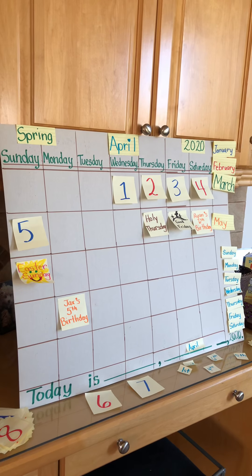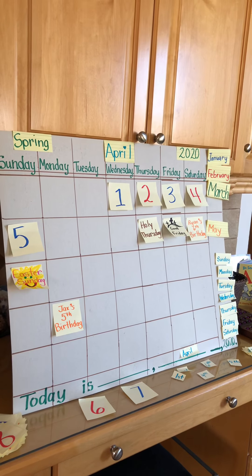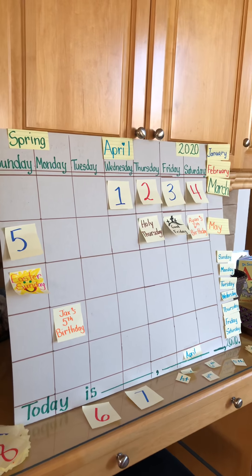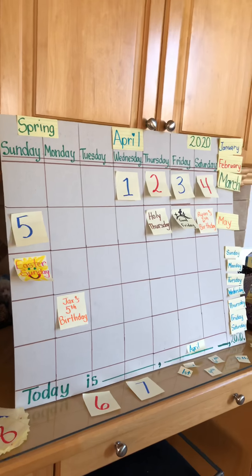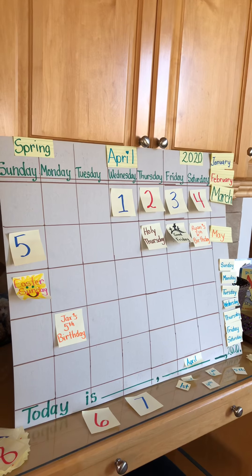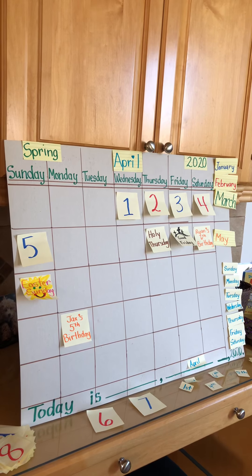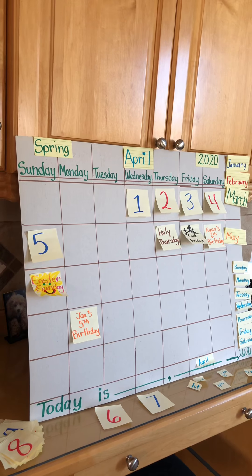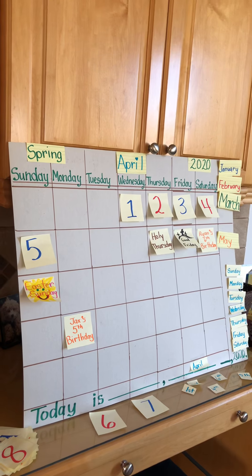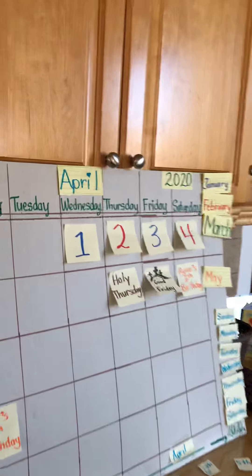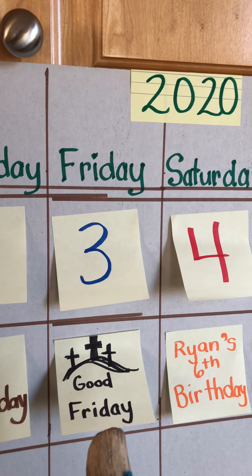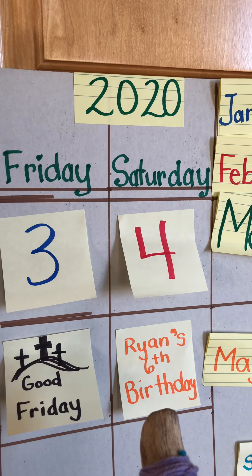We need a calendar for information, as well as to find out what day of the week it is. It is a very important tool to help us keep track of time. So I've added some very important details. First of all, this is Holy Week — the whole week is Holy Week. And I've added Holy Thursday, Good Friday, and Ryan's sixth birthday.